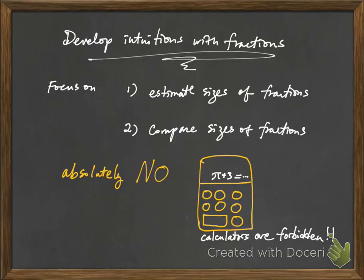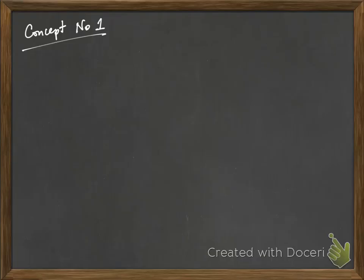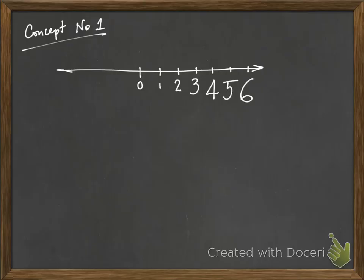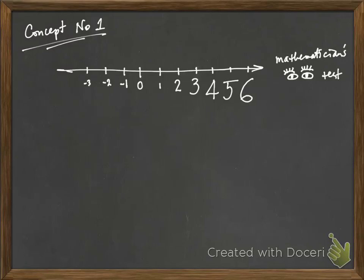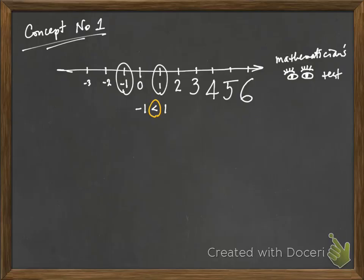We will start by going over some basic concepts about fractions. The first concept is that when you're comparing two numbers, the number that is further to the right on the number line is always greater. You can visualize this like going to a doctor's office, except this time you're going to a mathematician's office. So the numbers to the right are getting bigger and bigger. We denote their relationships using these pointing symbols. For example, negative one is less than one, because negative one is to the left of one on the real number line. This symbol — less than or greater than — always opens out to the number that is greater.